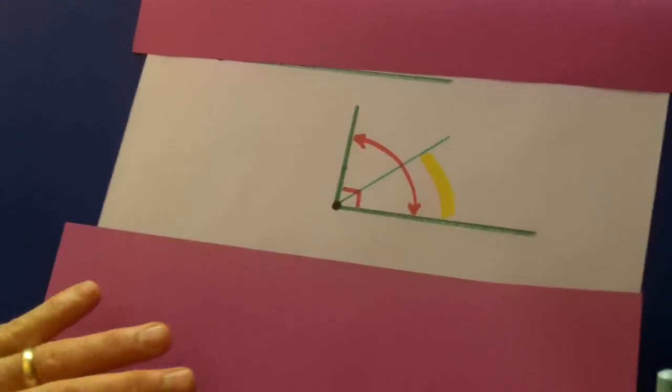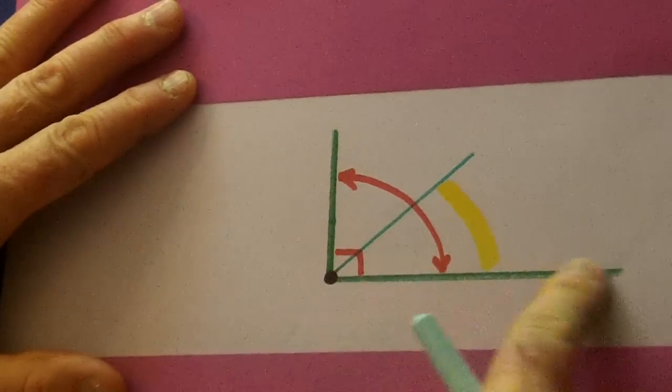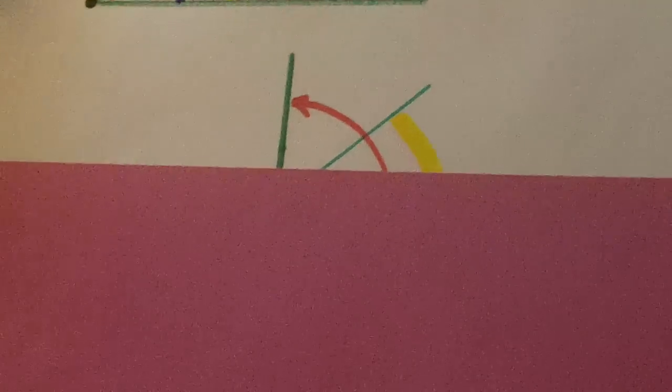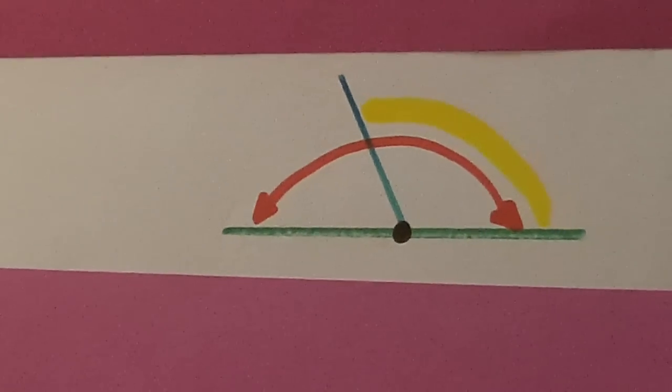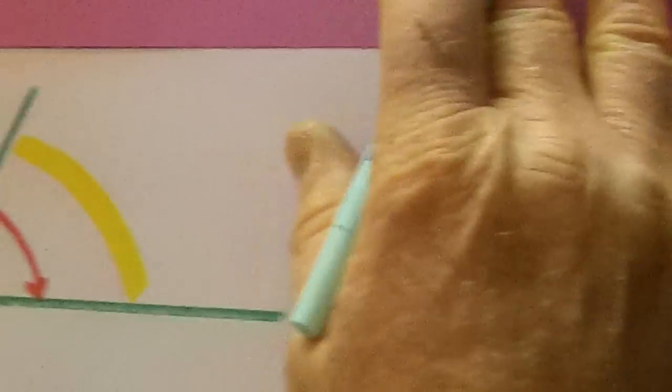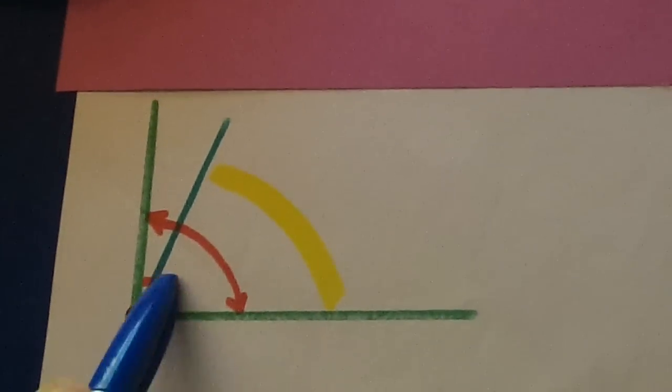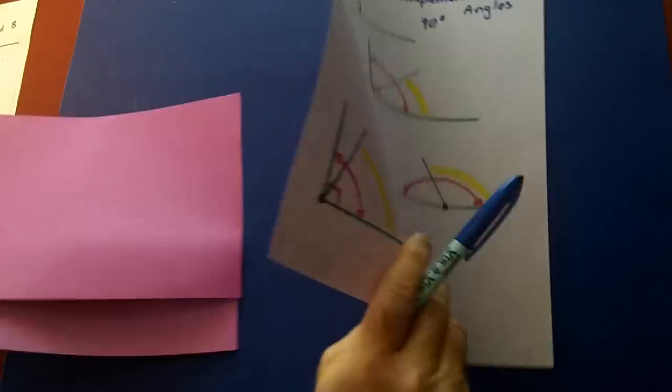Now, can you remember what two angles are that add up to 90 degrees? Complementary. How about two angles that add up to 180 degrees? Can you remember that? Supplementary. And let's review one more time. What do we call two angles that add up together to 90 degrees in a right angle? Complementary.